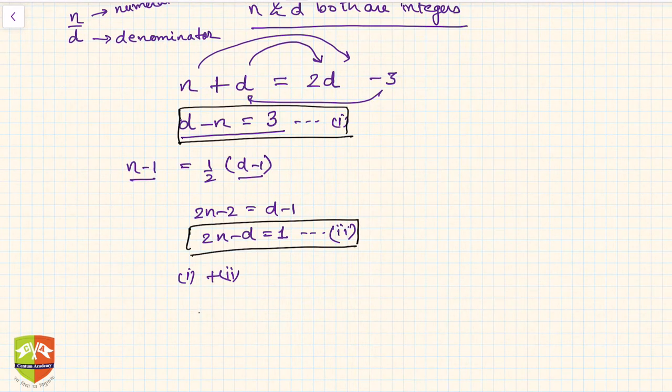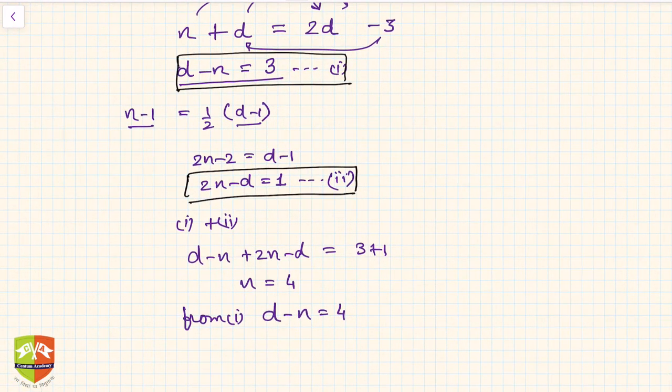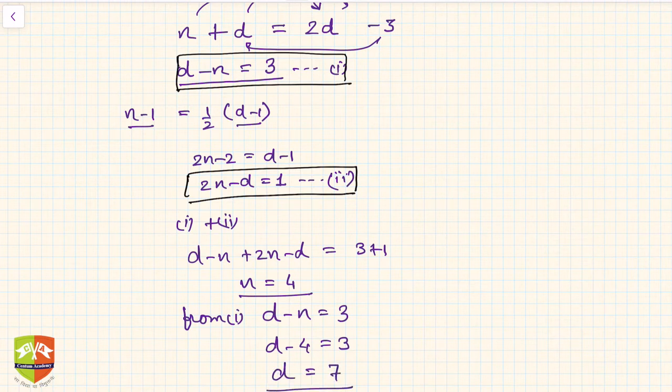You'll get d minus n plus 2n minus d equals 3 plus 1, so you'll get n equals 4. If n equals 4, then from equation 1, d minus n equals 3. So d minus 4 equals 3, because n we just found out is 4. So d equals 7.